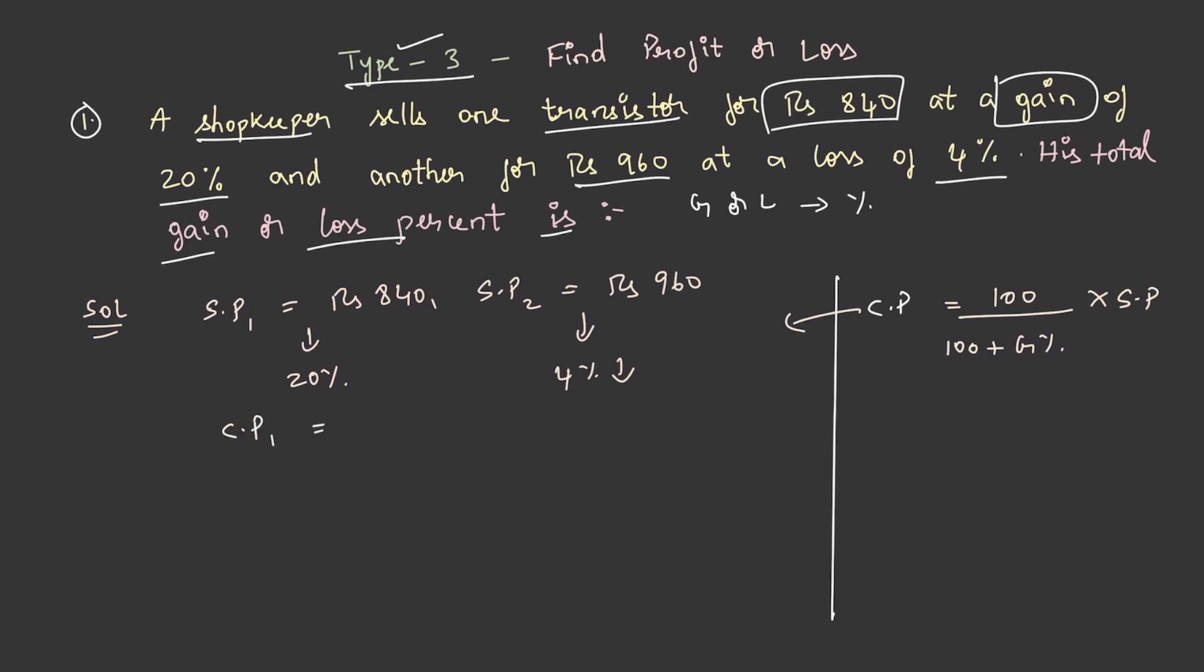On using this formula, the cost price of first transistor is equal to 100 by 120 into 840, as there has been a 20 percent gain and the selling price is rupees 840, this gives us rupees 700.